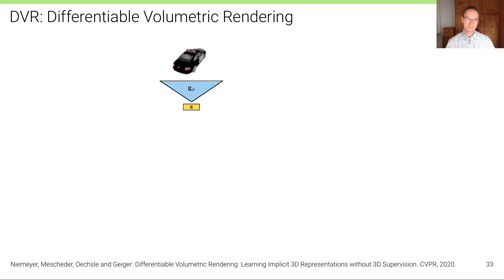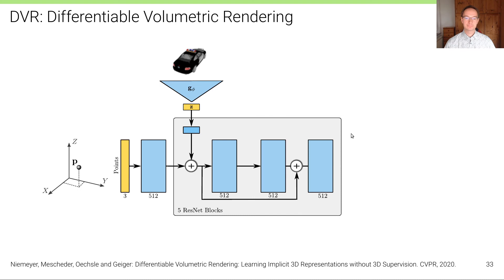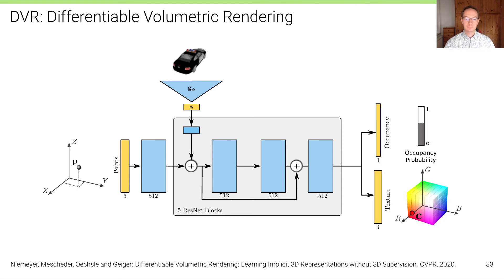So we want to learn from images. The architecture uses an encoder that encodes a 2D image into a global latent code. We then pass a set of 3D points together with this condition through residual network blocks. In contrast to before, we now have two shallow heads: one that predicts occupancy, and another that predicts texture or color.